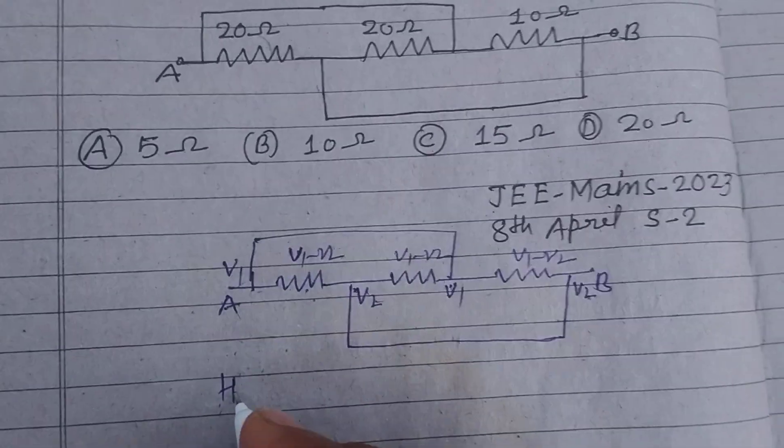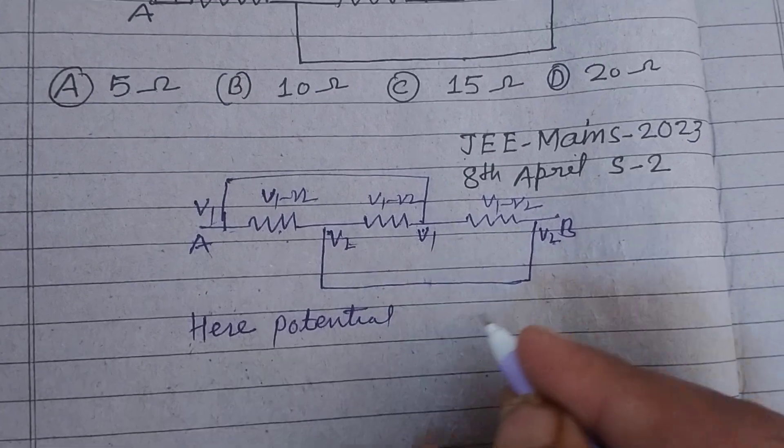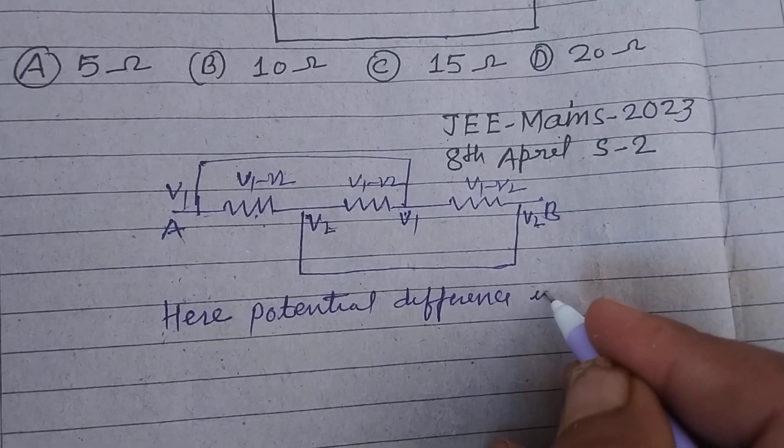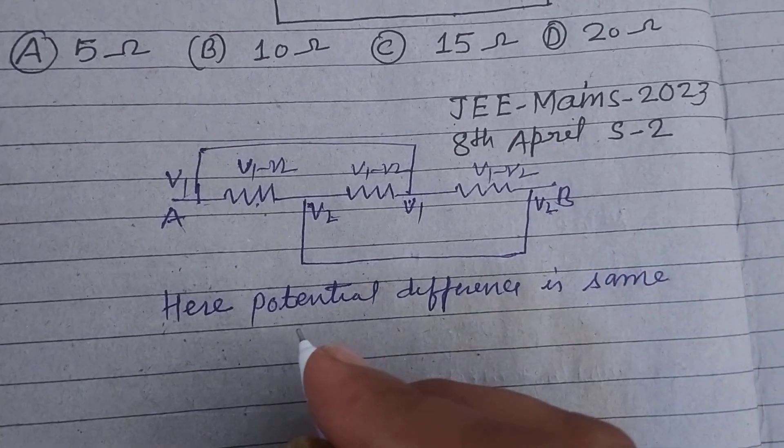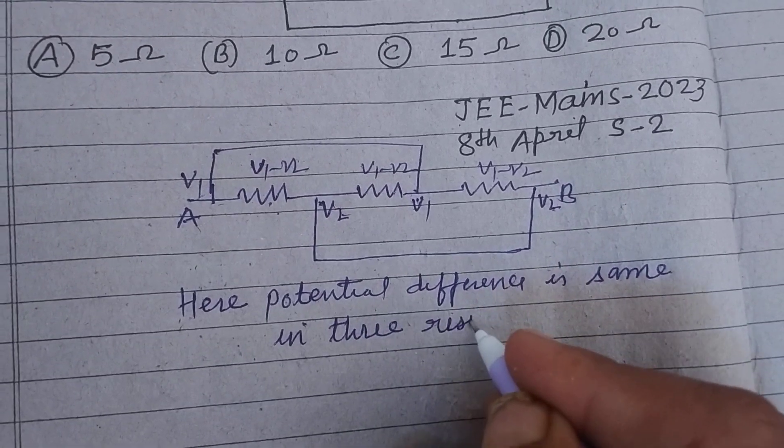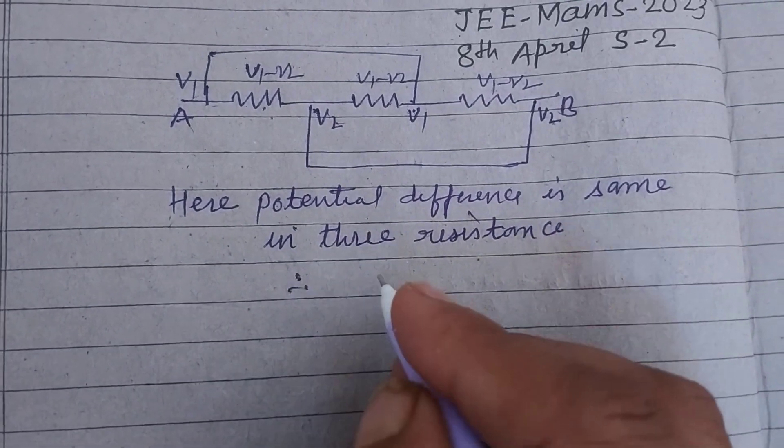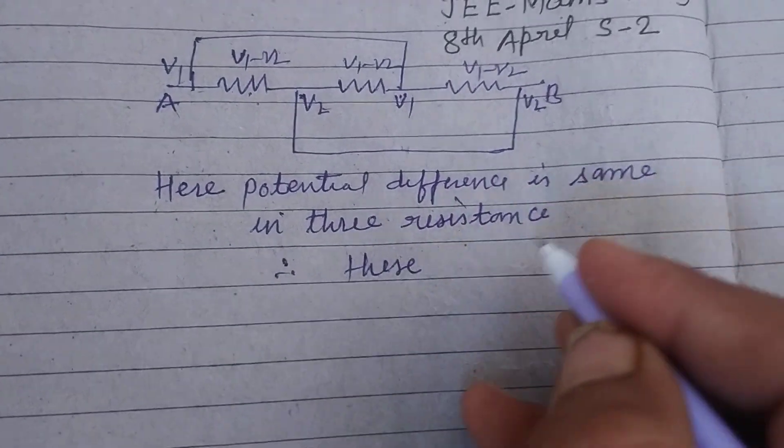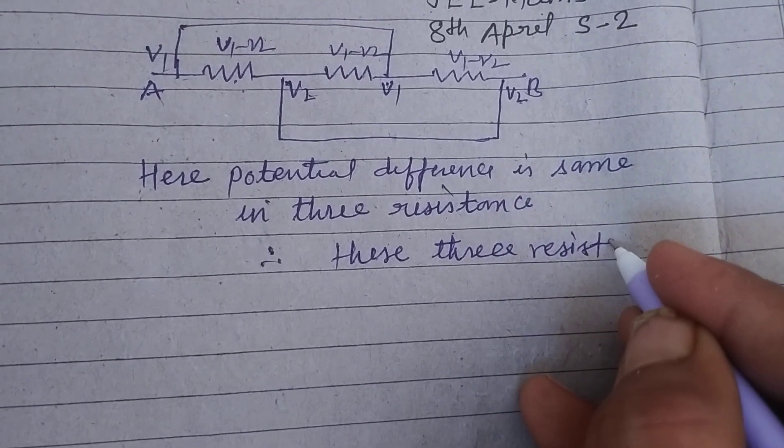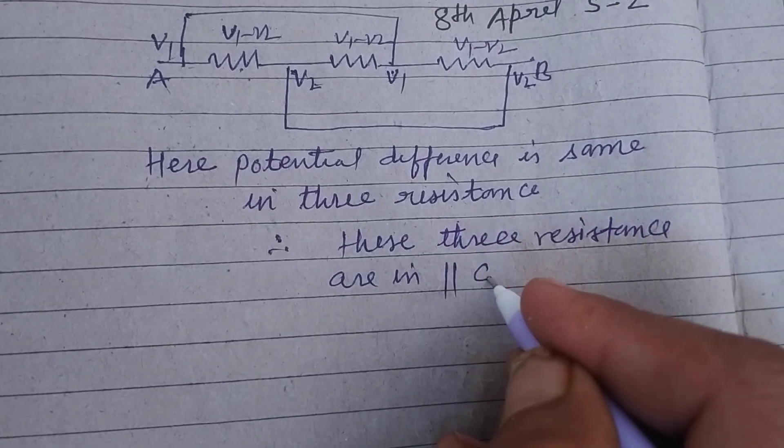So here, potential difference is same in three resistances. Therefore, these three resistances are in parallel combination.